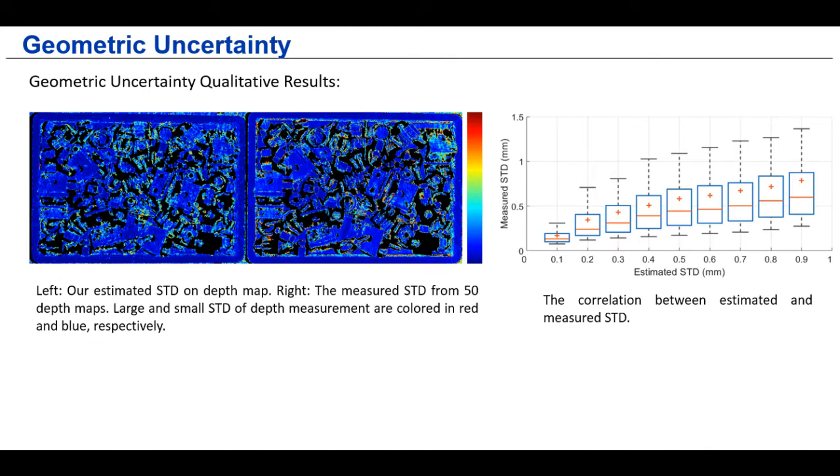And similarly, we boxplot the correlation between the measured and our estimated geometric uncertainties for qualitative evaluation. And we can clearly see the strong correlation between our estimation and the measured uncertainties.